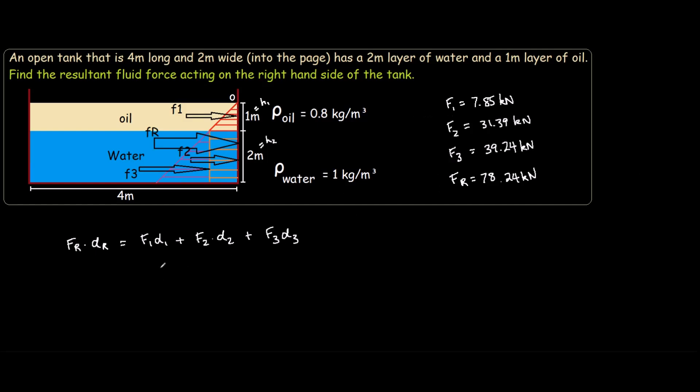So F1, F2, F3 we now have, but we have to find D1, D2, D3. D1 is simple enough. If we know the centroid of a triangle, the force acts two thirds from the end. So D1 would be two thirds of one meter. D2 would be one meter plus the centroid of this rectangle which is one, so that's 2 meters. And D3, remember the centroid is two thirds, so it would be one plus two thirds of two, which equals three meters from O.